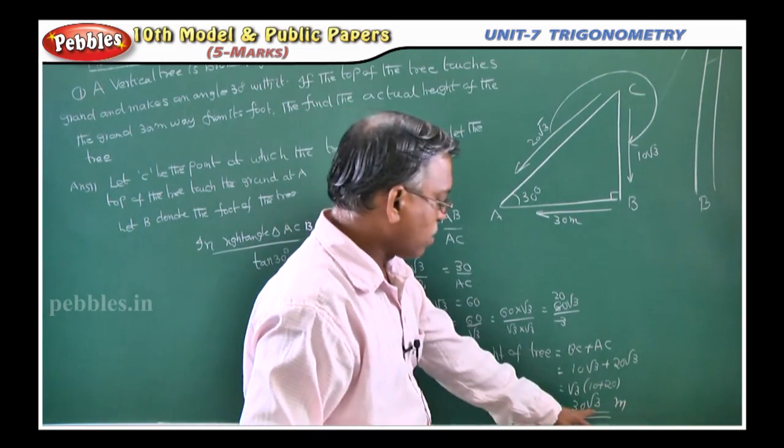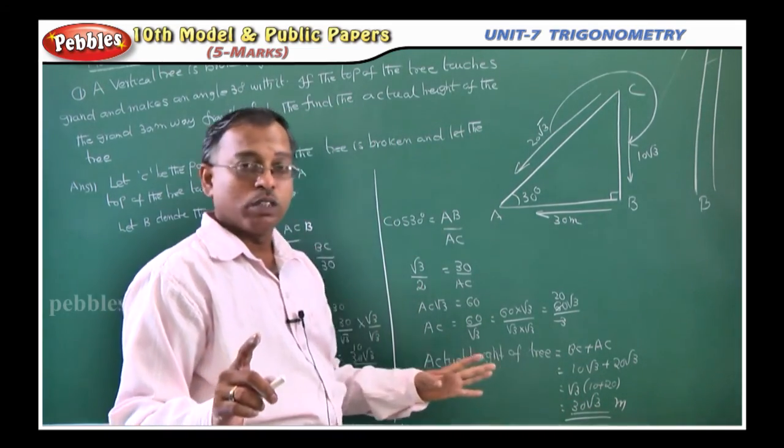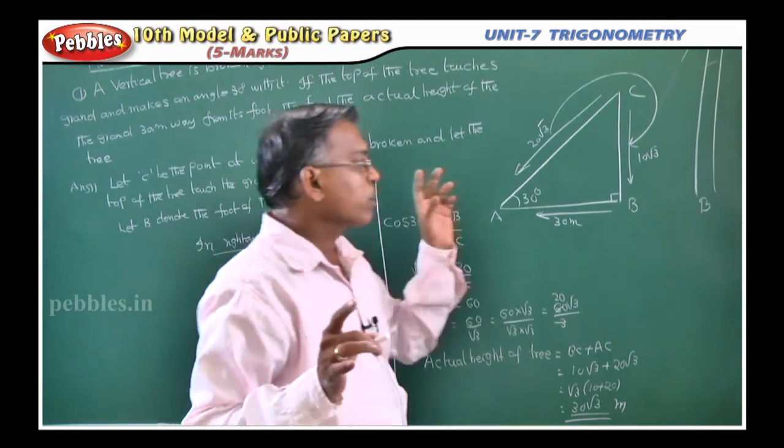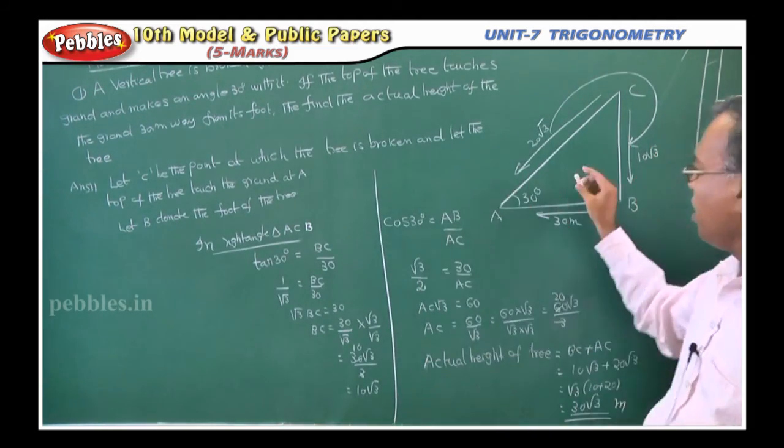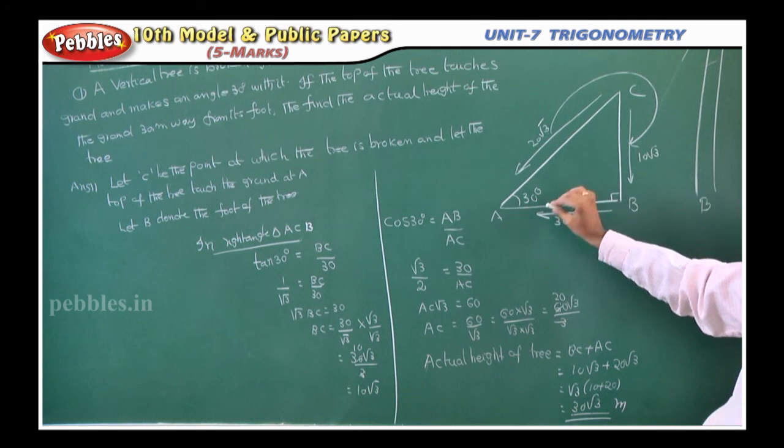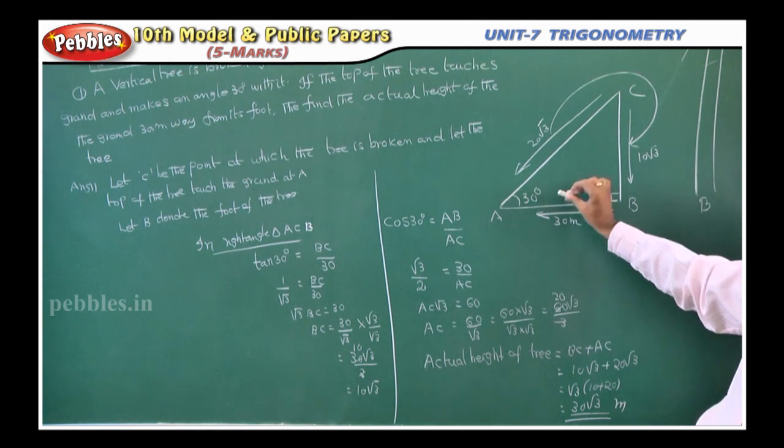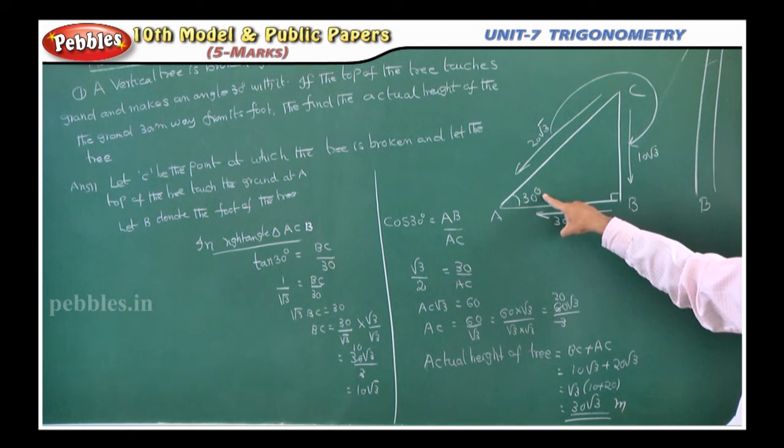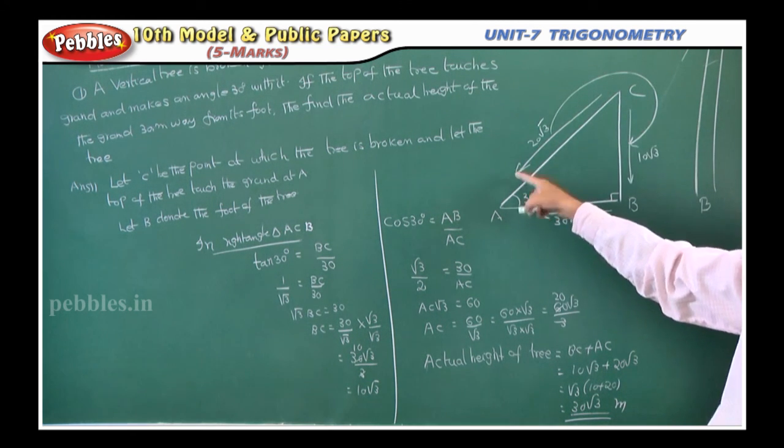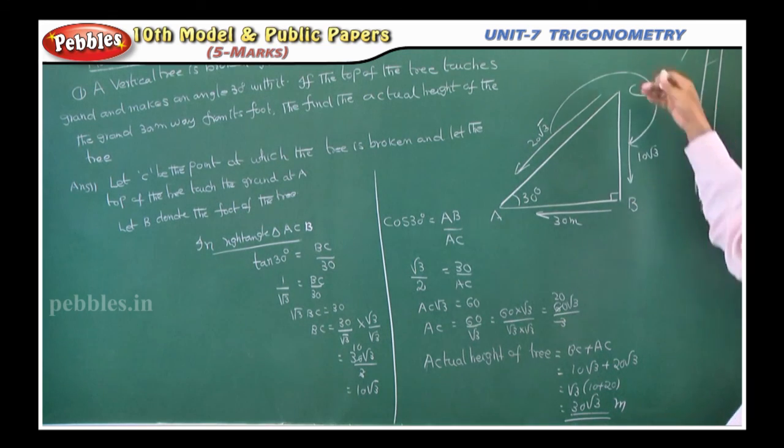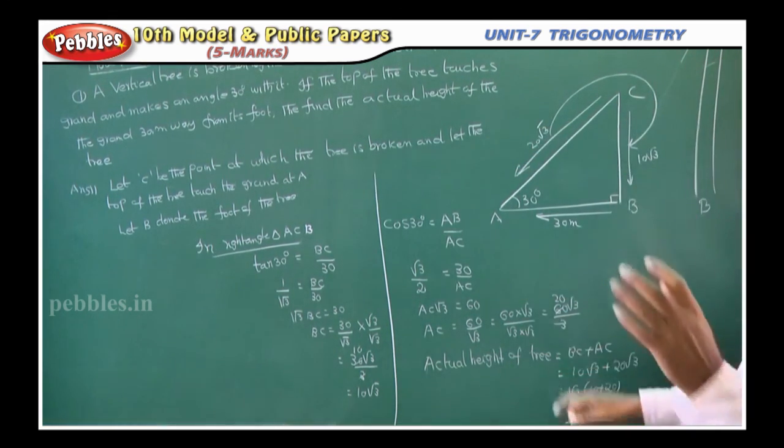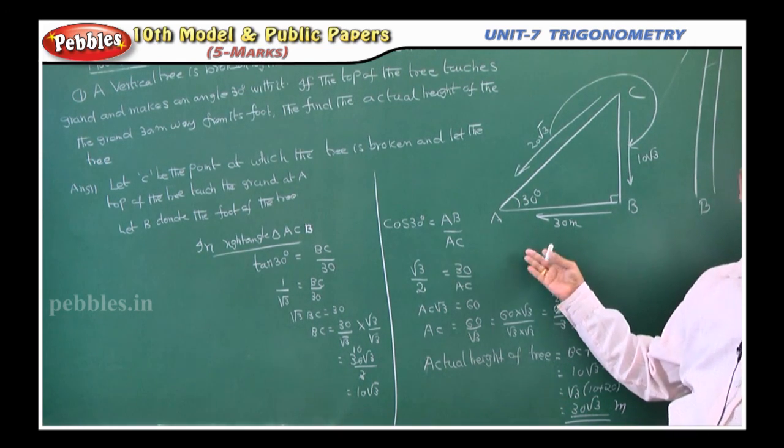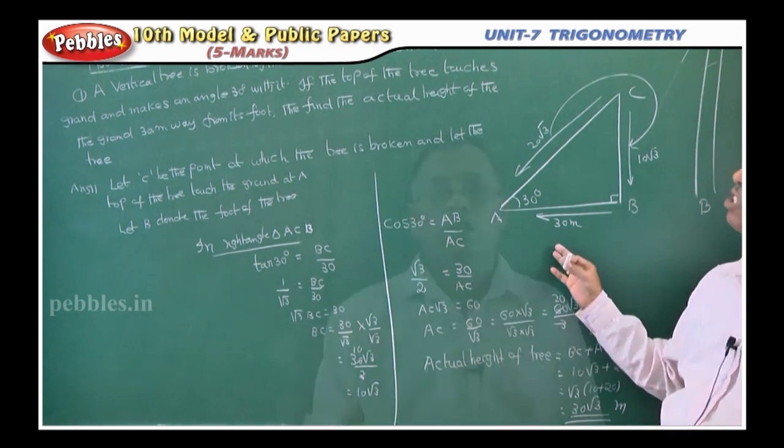If you want root 3, 1.732 you can multiply, that is up to you. Even if you stop here, they will give the mark. Listen one more time. In this triangle, one time you take tan 30 such that you will get opposite side, and one time you take cos 30 such that you will get hypotenuse. That is what we need: opposite side plus hypotenuse will give you the total height of the tree. Very important problem, repeatedly they ask in the examination.